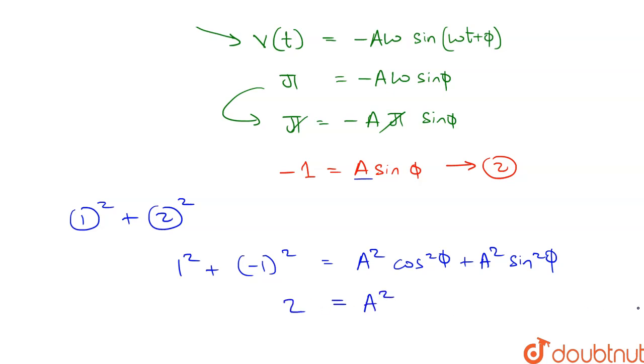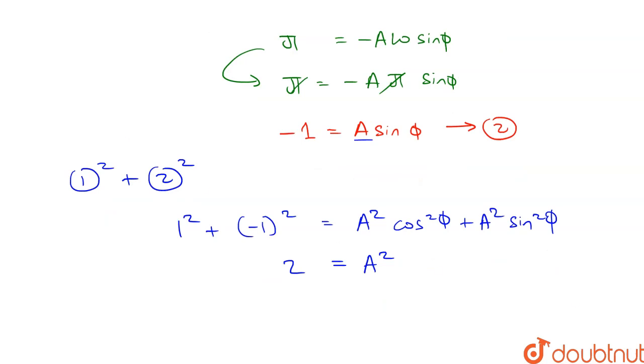Taking square root, we get the amplitude A = √2 cm.